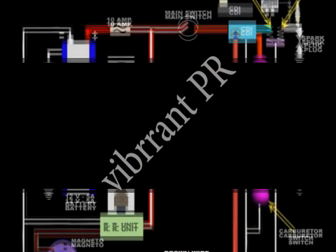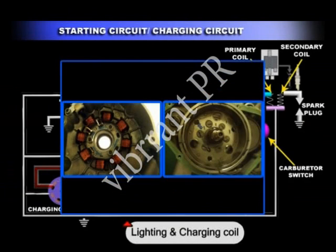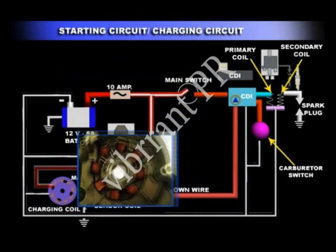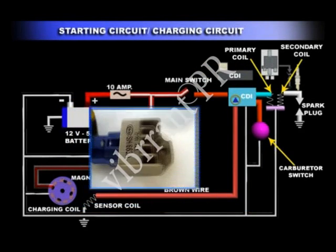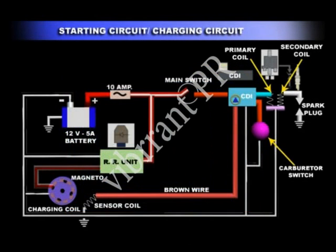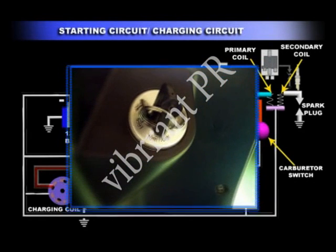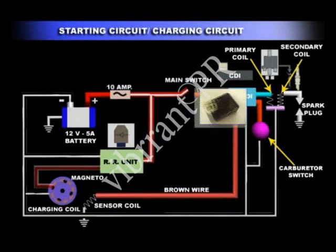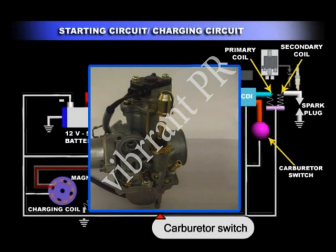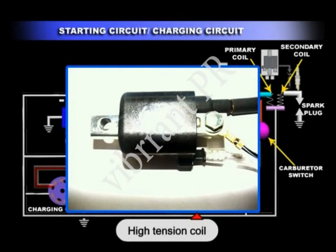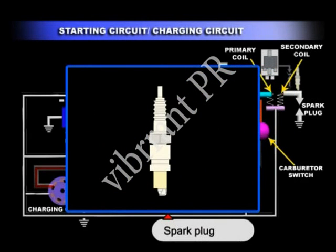This is the starting or the charging circuit. The starting circuit or the charging circuit consists of the lighting and charging coil, sensor coil, rectifier come regulator unit, battery, main switch, CDI unit, carburetor switch, high tension coil, and the spark plug.